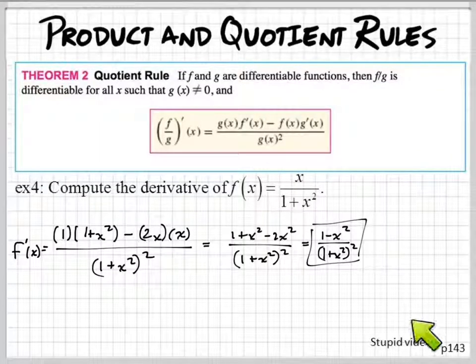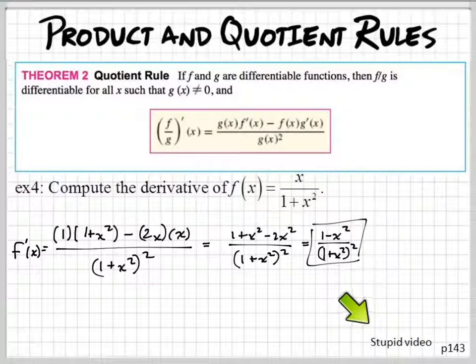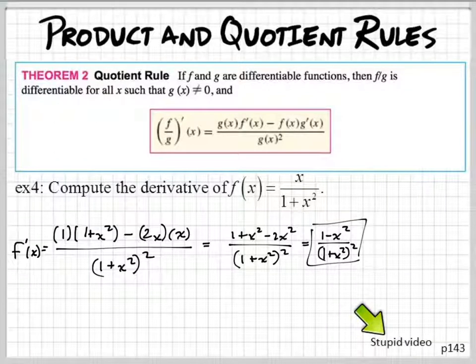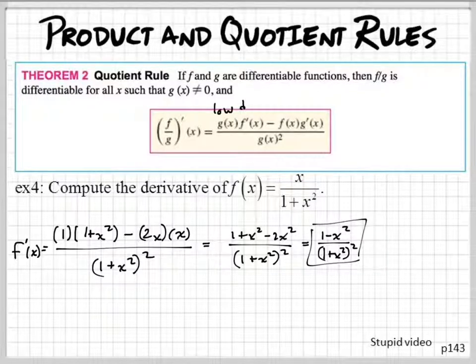All right, now I do have a stupid video and this will explain everything about high D low. Okay, and we'll watch in a second. I'm not going to put in my video though. So the video says low D high. The D is derivative.